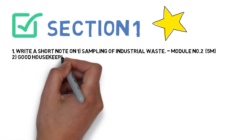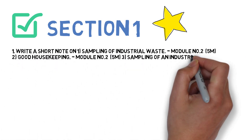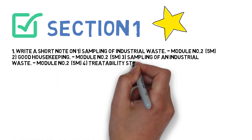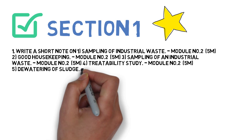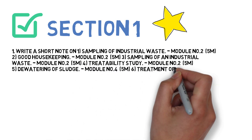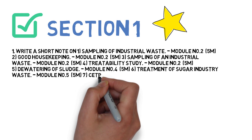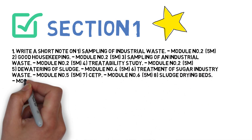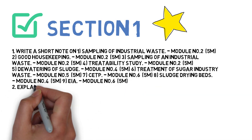The first question says short note on — there are multiple short notes you need to do. First is sampling of industrial waste, next is good housekeeping, third is sampling of industrial waste and treatability study, next is dewatering of sludge, next is treatment of sugar industry waste, next is FETP, and next is sludge drying beds.